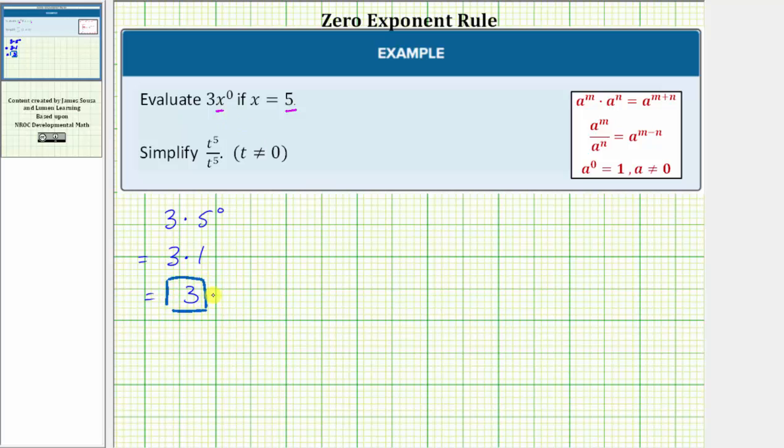In the next example, we're asked to simplify t^5 divided by t^5. Notice how we're also told t doesn't equal zero. Well, because we're dividing and the bases are the same, we apply the quotient property of exponents, which states when dividing and the bases are the same, we subtract the exponents, and it's always the top exponent minus the bottom exponent.